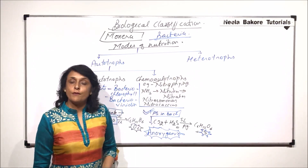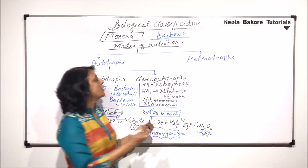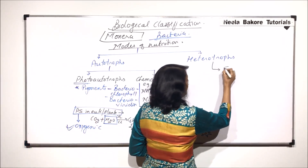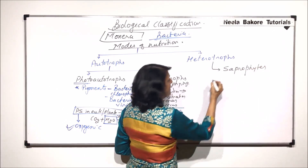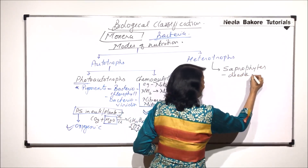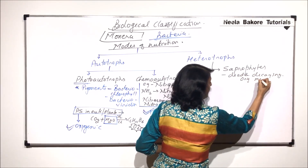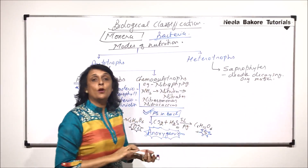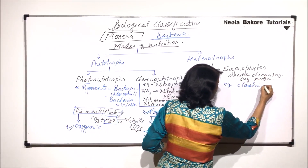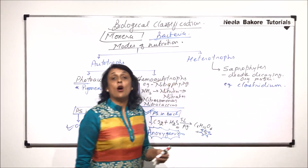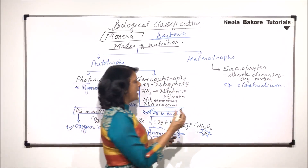Now let us come to the heterotroph category — bacteria that cannot synthesize their own food and depend on other organisms. The first type is saprophytes, which obtain their nourishment from dead and decaying organic matter. An example here is Clostridium. It helps in decomposition, breaks down dead organic matter, and that is how it obtains its energy.